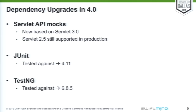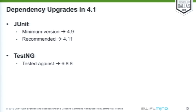JUnit — we test against up through 4.11, and TestNG is tested up through 6.8.5. In 4.1, we have another change with JUnit: the minimum version is now 4.9 due to some deprecations and changes internal within JUnit. So you need to upgrade to at least 4.9 — we recommend you go with 4.11, staying with the latest and greatest. And TestNG, we're just tracking the latest version, so no big changes in the TestNG support.